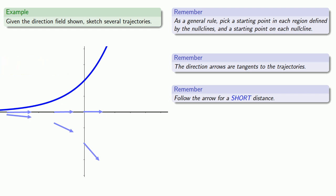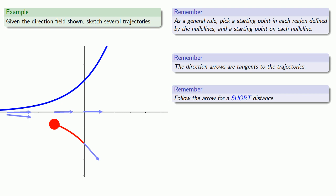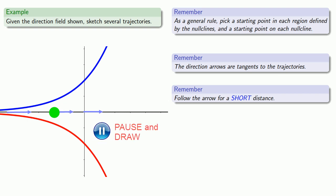So these are trajectories above the nullcline. Let's pick a starting point below the nullcline — how about here — and we'll follow the direction arrow for a short distance to get part of the trajectory. This takes us to another direction arrow, so we should follow that direction arrow. We'll also try to find the part of the trajectory leading up to our starting point. Finally, we should pick a point that actually starts on the nullcline as well — how about here? The direction arrows tell us that we should go to the right, which takes us to a direction arrow that also says go to the right, and we can sketch the trajectory leading to this point.